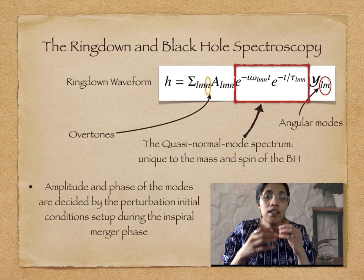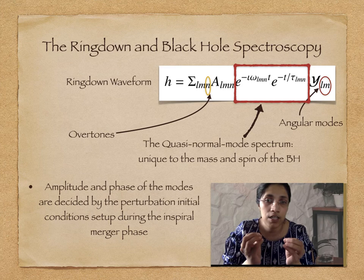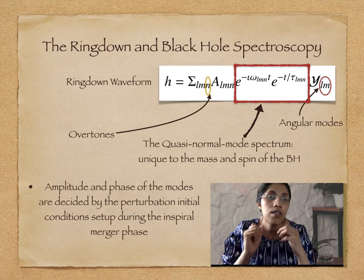These frequencies and damping times are characteristic of the mass and spin of the black hole and are unique to that mass and spin. The amplitude and the phase, on the other hand, are decided by the initial conditions set during the inspiral and during the merger. The form of the ringdown waveform is given on the slide.